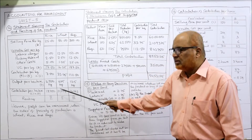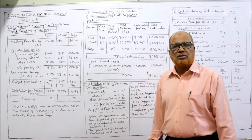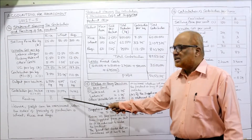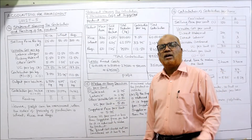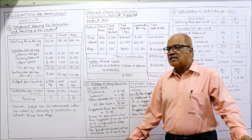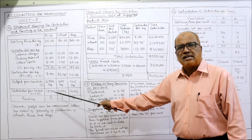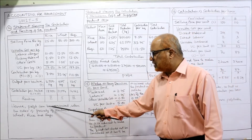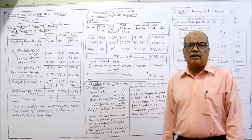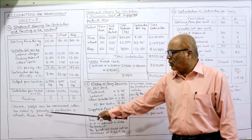Now see which contribution is the highest. From wheat: ₹21,094 — this is the highest contribution per hectare of land, so first rank is given to wheat. Secondly, rice at ₹18,750 gets second rank. Lastly, ragi gets third rank. The preferential order is: first wheat, second rice, third ragi. Profit can be maximized when the order of priority of production is wheat, rice, and ragi.